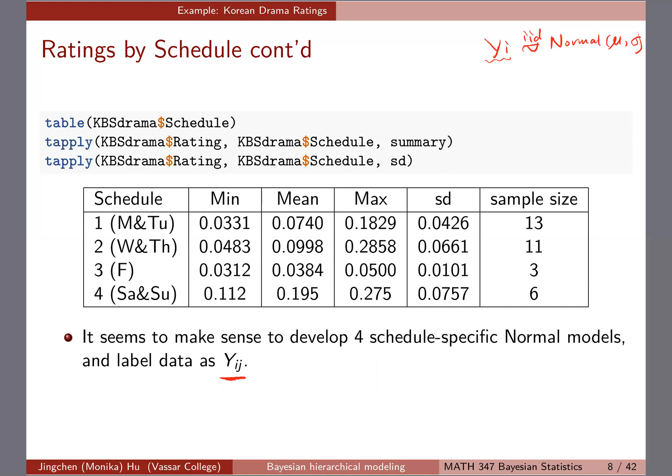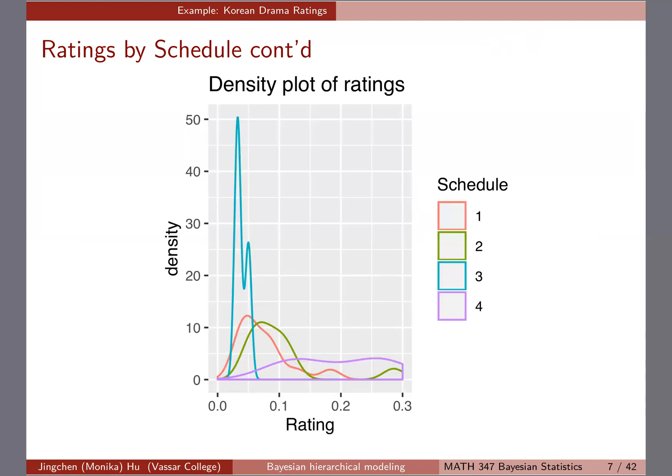You already see that within different schedules, the rating behaves pretty differently in terms of the density plot. So it probably makes sense to, in addition to the I label, also label J.